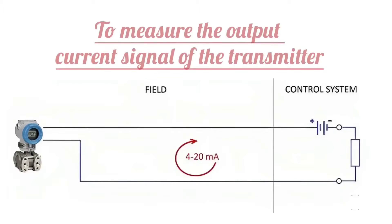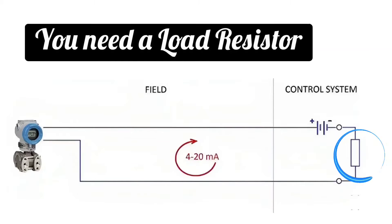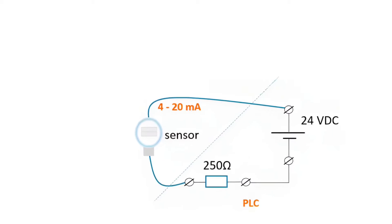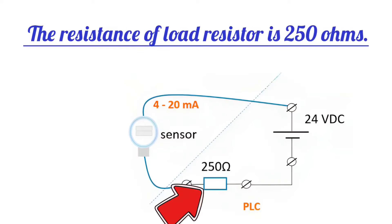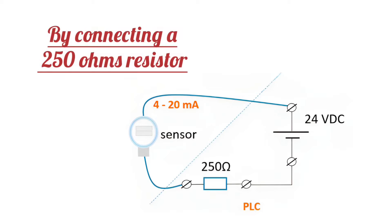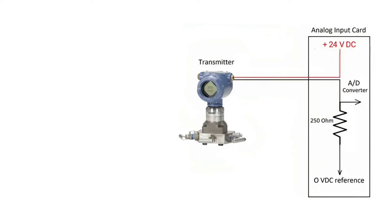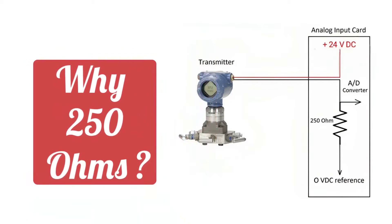To measure the output current signal of the transmitter, you need a load resistor. The resistance of the load resistor is 250 ohms. By connecting a 250 ohm resistor, the current in the current loop can be measured. Now the question arises: why is it 250 ohms?